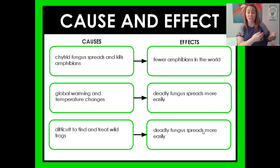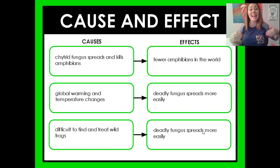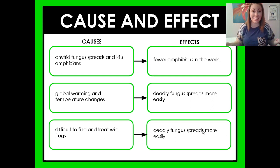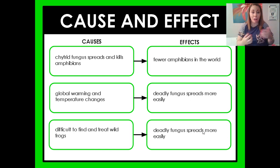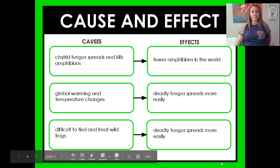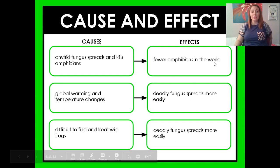Global warming causes that temperature change that makes it easier for the fungus to spread, because the warmer weather is better for that fungus. And it's hard to find and test all these wild frogs to see if they've gotten this fungus so they can be treated. Cause and effect — this is going on, so this is the result.